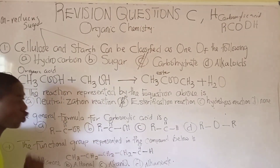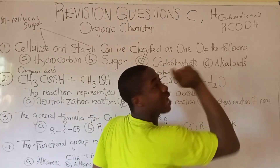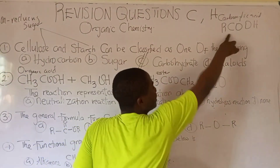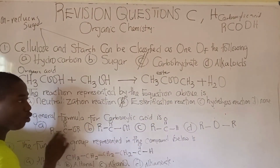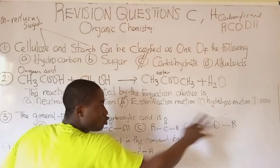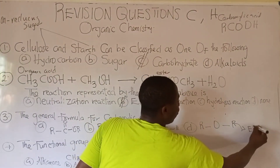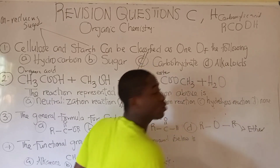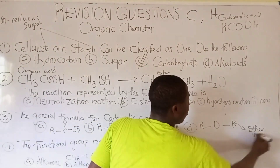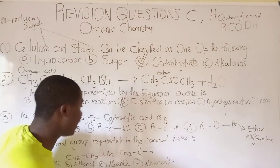Let's check each option. All options have RO followed by carbon — except option D, which is an ether, also called an alkoxyalkane. After RO bonds to carbon, that carbon bonds to oxygen with a double bond, and then bonds to another oxygen atom.